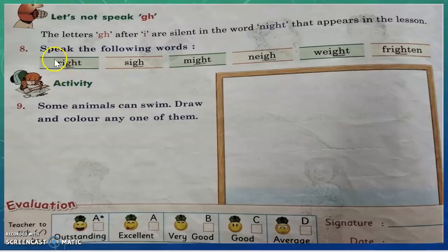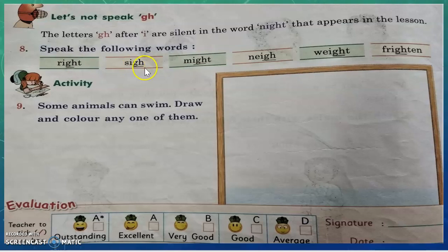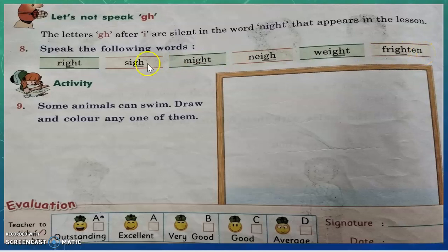Next: how to speak these given words. Whenever G-H is given after I, it is silent — no need to read this G-H. Here also you can see G-H is given after the letter I, so in that case G-H is a silent letter. How to read or pronounce it: write, sigh, might, nigh, wait, frightened. Remember — whenever the letter G-H comes after I, it is silent.